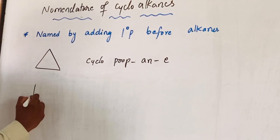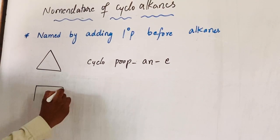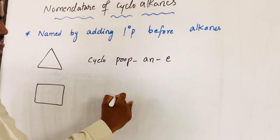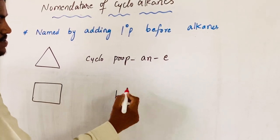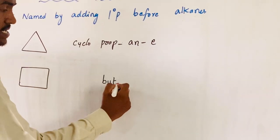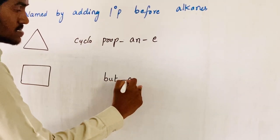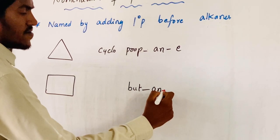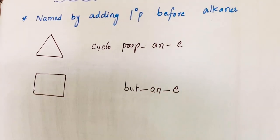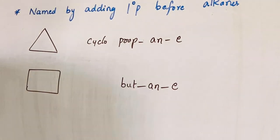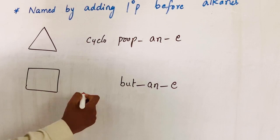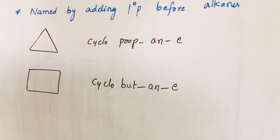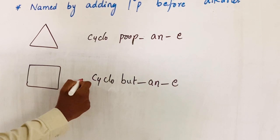Taking another example — a 4-membered ring. The root word is 'But', the primary suffix is 'ane' (saturated hydrocarbon), the secondary suffix is 'e', and the primary prefix is 'Cyclo' because it is a cyclic compound. The secondary prefix is absent.